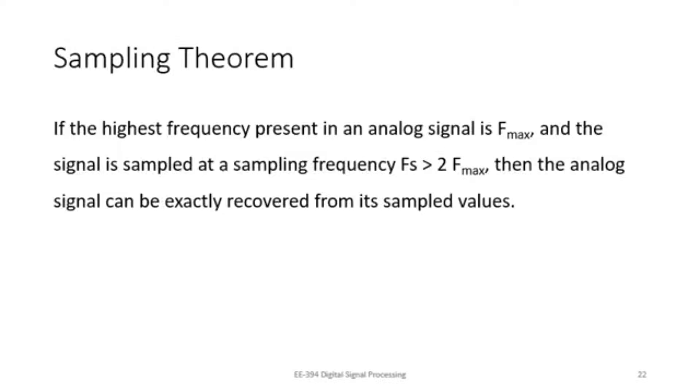But in case fs was incorrectly chosen, and it was less than twice f max, then once the sampling is done, then there is no hope or no way to get your original signal back. This is what is meant by the sampling theorem.